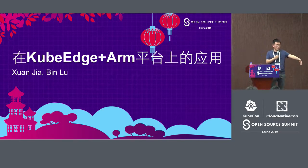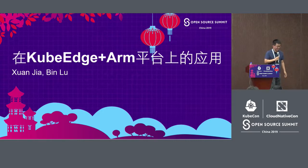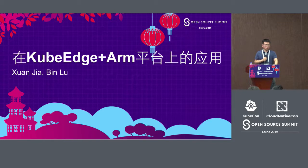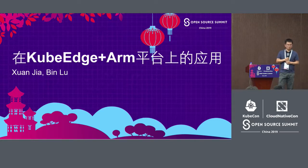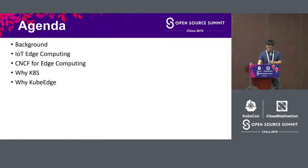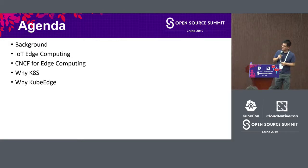I am Jiaxuan from China Mobile, and I also have a partner joining me for this session, Mr. Lu Bin from ARM. I am responsible for two parts: one is Kubernetes, where I am a member, and another is secure computing. Today I will focus on these parts, based on Kubernetes and the ARM platform, exploring potentially future applications, the needs of edge computing, and why Kubernetes fits more for these scenarios.